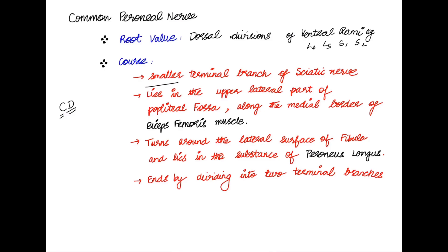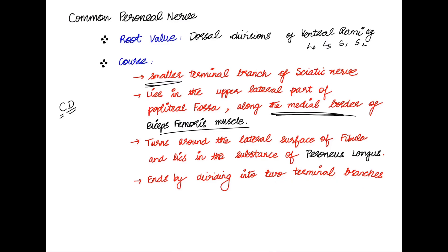The common peroneal nerve is the smaller terminal branch of the sciatic nerve. It lies in the lateral part of the popliteal fossa, along the medial border of the biceps femoris muscle, and then ends by dividing into two terminal branches.